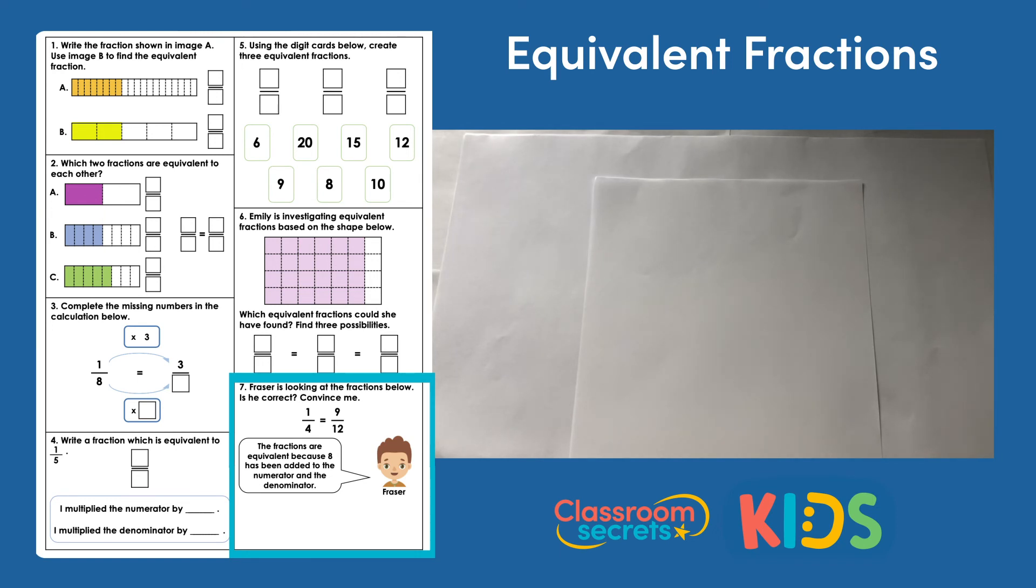What we already know about finding equivalent fractions. We have practiced multiplying the numerator and the denominator by the same number to find equivalent fractions. So rather than adding 8 he could have multiplied the numerator and the denominator by 8. By adding 8 he has not found an equivalent fraction. He's found a different fraction. So a possible answer that we could say is that Fraser is incorrect because the numerator and the denominator need to be multiplied by 8 to be equivalent rather than have 8 added to them.